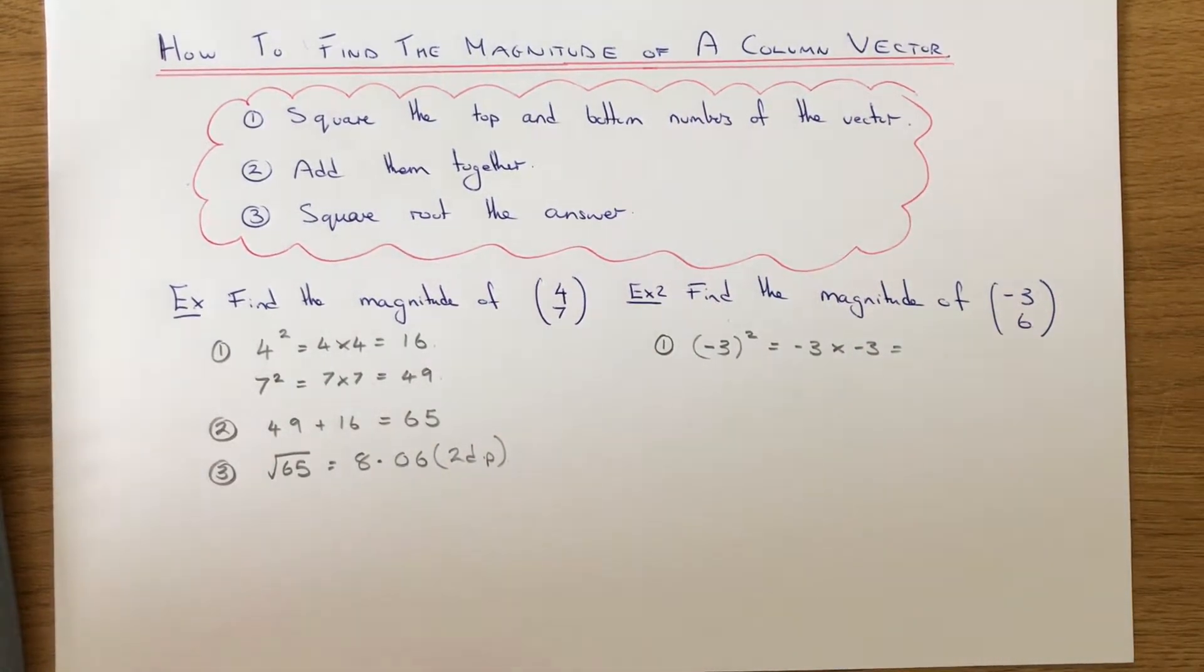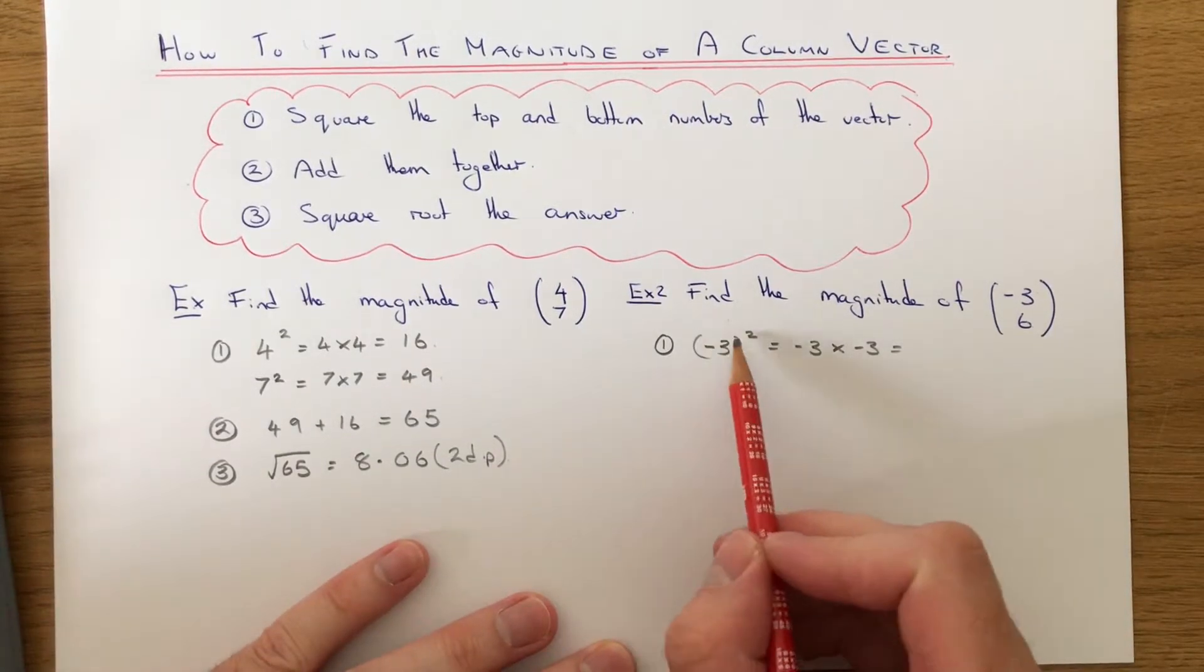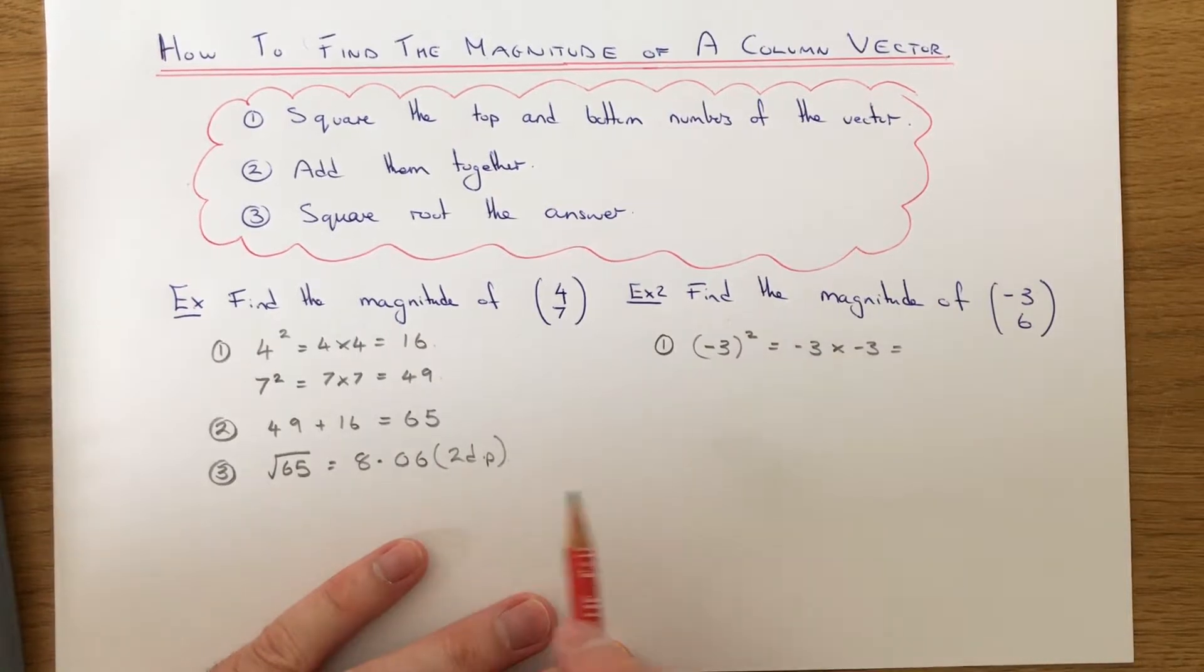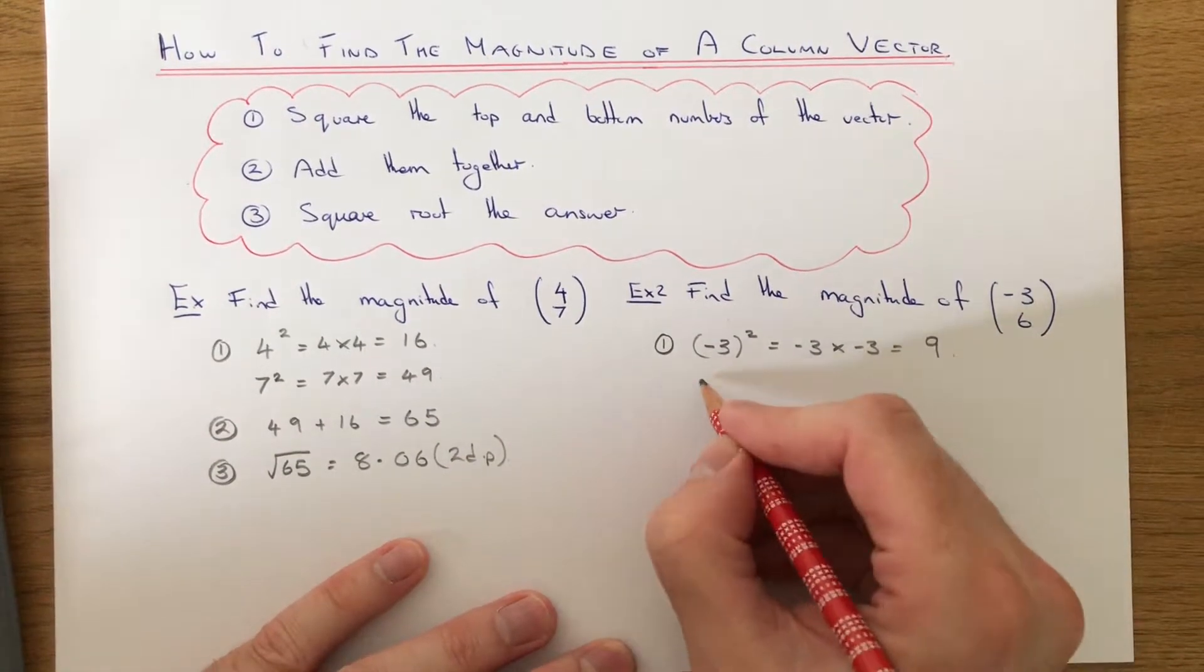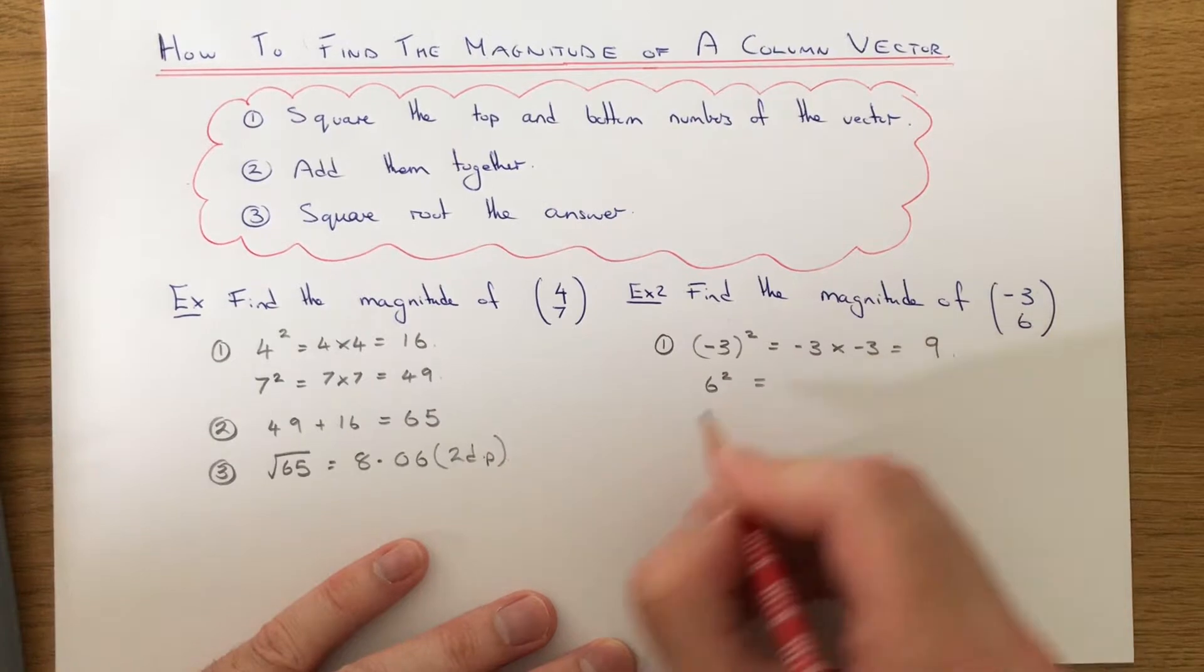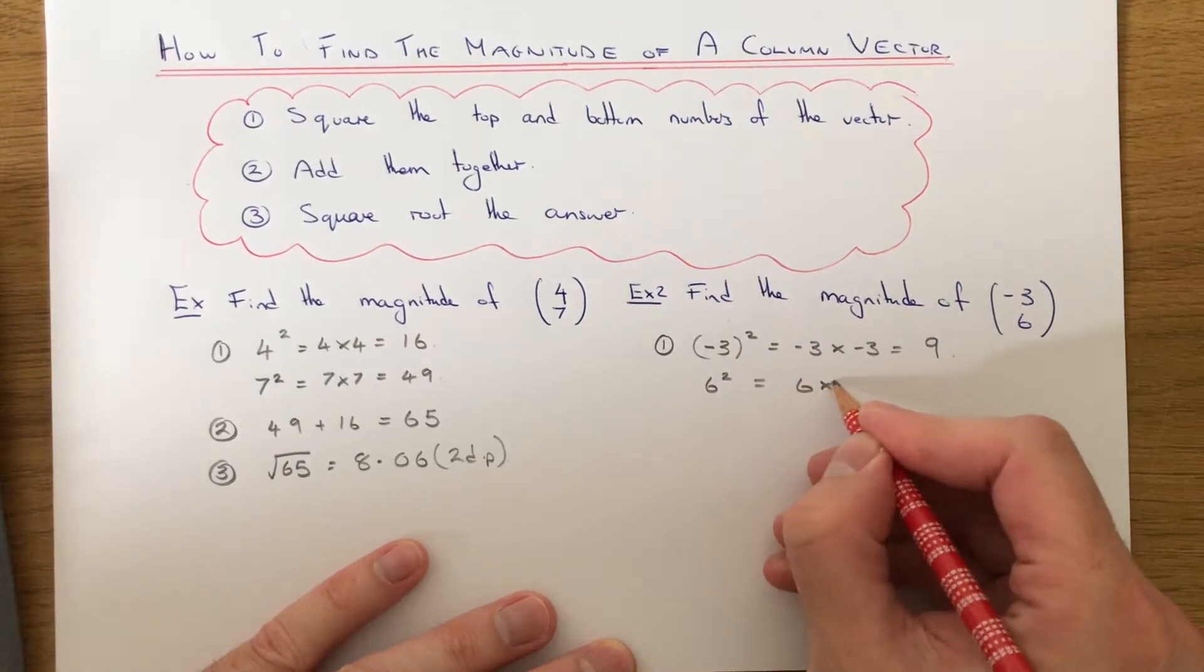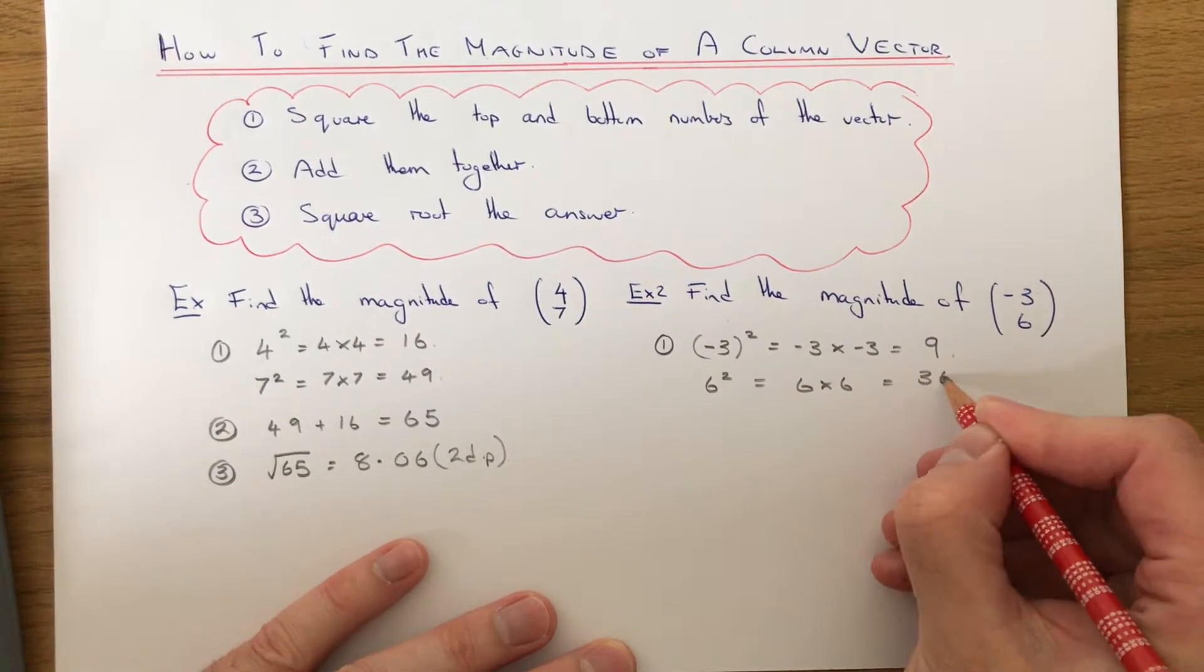This answer will always be positive because we're multiplying two negative numbers together. If you're putting it on your calculator, make sure you put the negative number in a bracket, otherwise it might not come out correct. This gives us an answer of 9. Now square the 6: that's 6 times 6, which is 36.